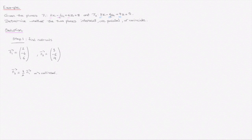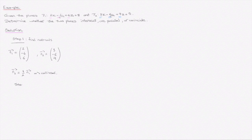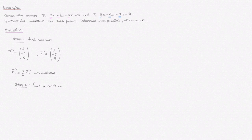Consequently, when the two normals are collinear, the two planes are either parallel or they coincide. So we move on to steps 2 and 3 to determine which of the two it is. Step 2: find a point on either plane 1 or plane 2.